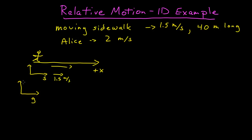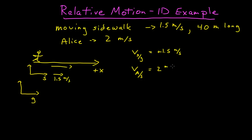If I want to look at the relative velocities, and we're in one dimension so the direction of the velocity is determined by the sign — the velocity of the sidewalk relative to the ground is positive 1.5 meters per second. Then the velocity of Alice relative to the sidewalk is going to be 2 meters per second.